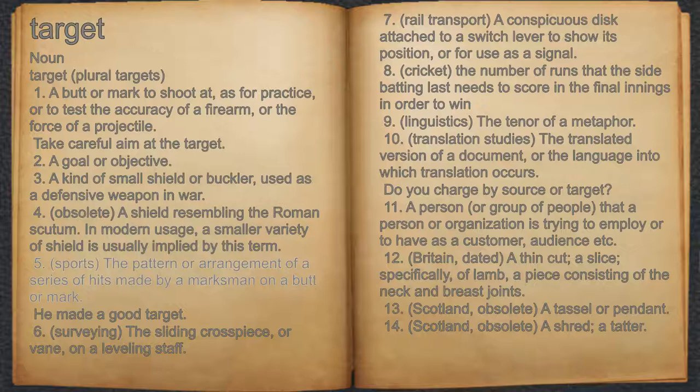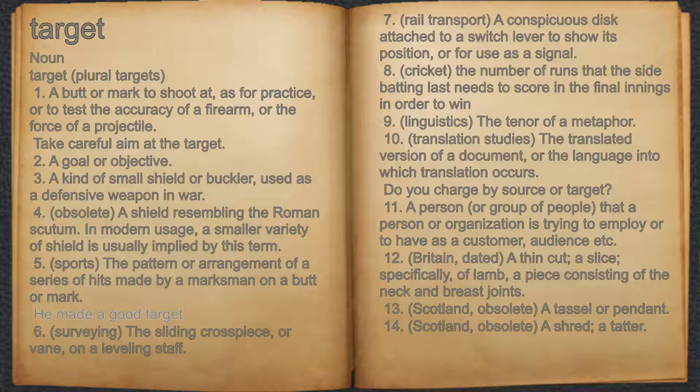5. Sports, the pattern or arrangement of a series of hits made by a marksman on a butt or mark. For example, he made a good target. 6. Surveying, the sliding cross piece, or vein, on a leveling staff.